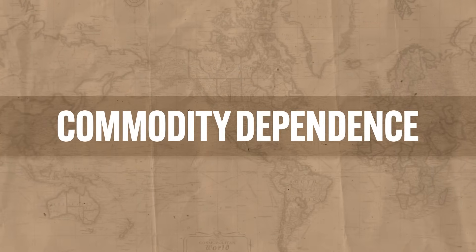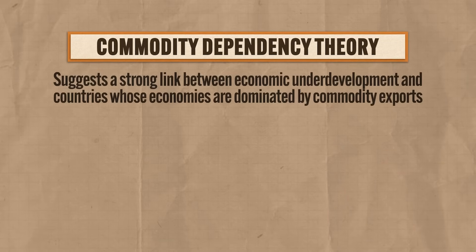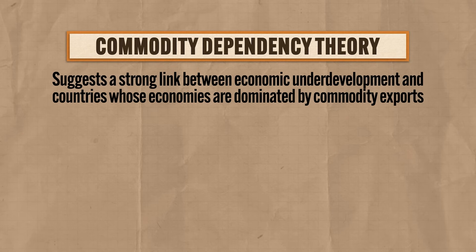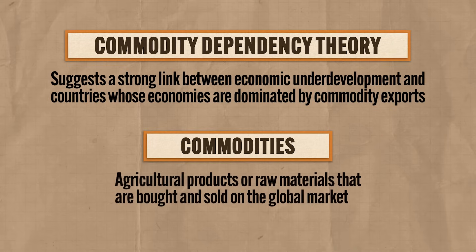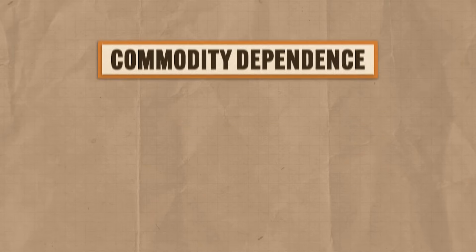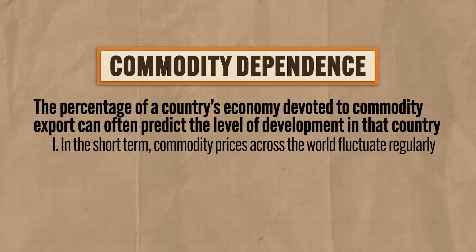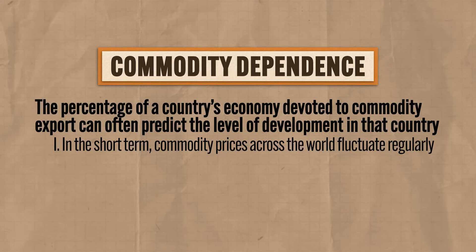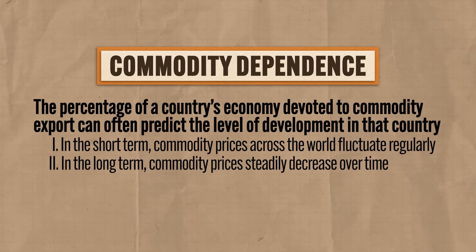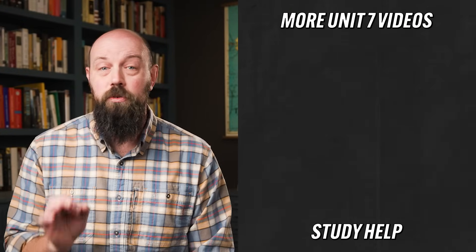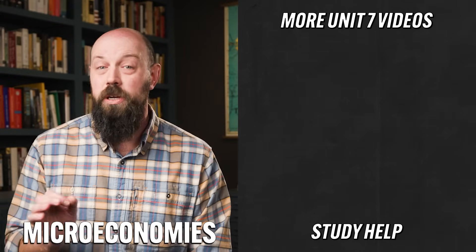The fourth theory you need to know is called Commodity Dependence Theory. According to this theory, there's a strong link between economic underdevelopment and countries whose economies are dominated by commodity exports. Commodities describe agricultural products or raw materials that are bought and sold on the global market. The percentage of a country's economy devoted to commodity exports can often predict the level of development in that country, for two reasons. First, in the short term, commodity prices fluctuate regularly — oil prices are high today, then low tomorrow, up and down. So if commodity prices are high and a country's economy is dominated by commodity exports, that economy will grow, but if prices drop, those same economies will suffer. Second, in the long term, commodity prices steadily decrease over time, meaning an economy specializing in commodity exports — often referred to as countries with micro-economies — will also shrink over time.